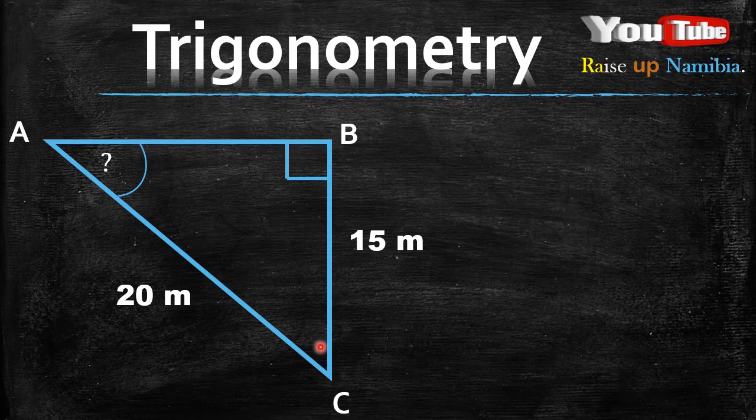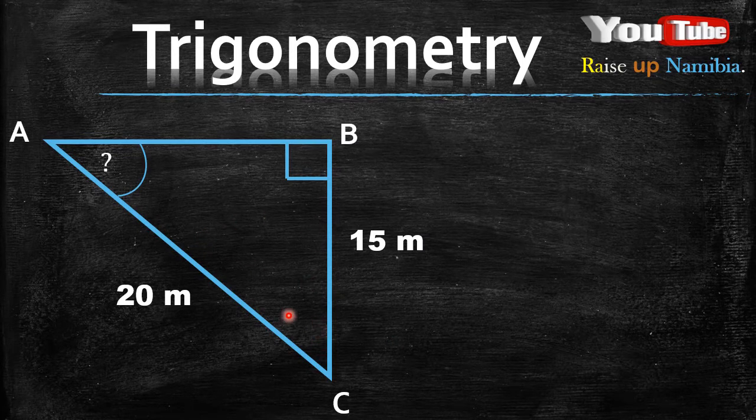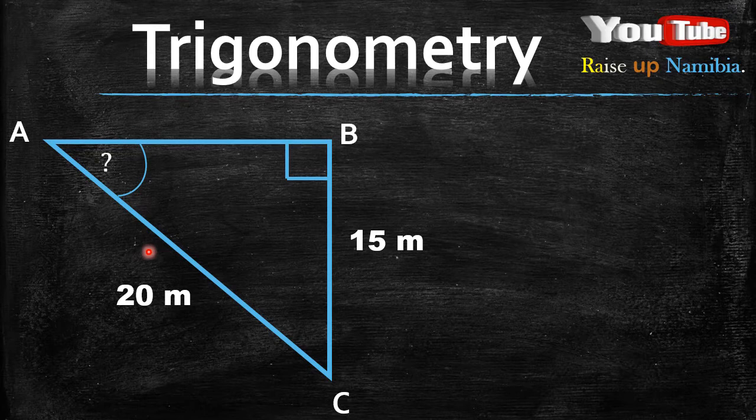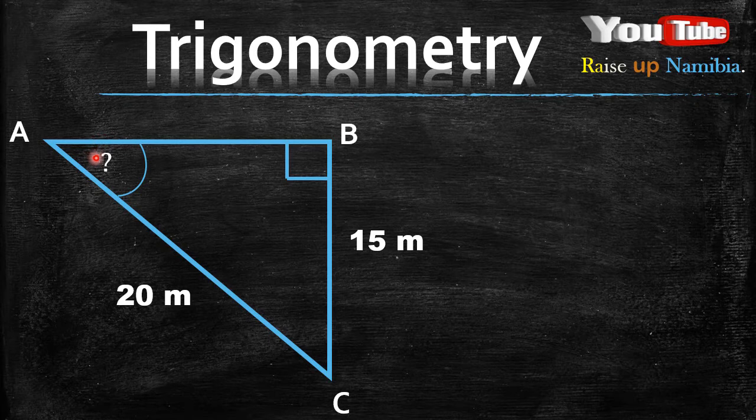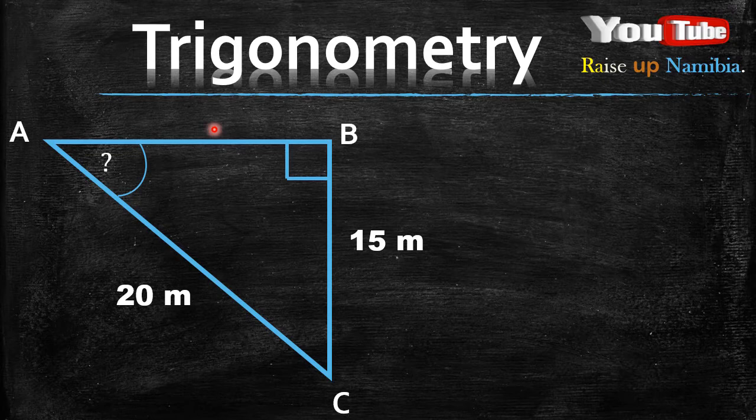Say you have triangle ABC. Now you are given line AC which is 20 meters and line BC which is 15 meters, and you are asked to find this angle. So what do you do? The concept is the same. Number one, always label your sides.